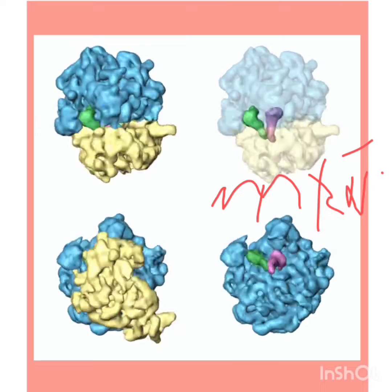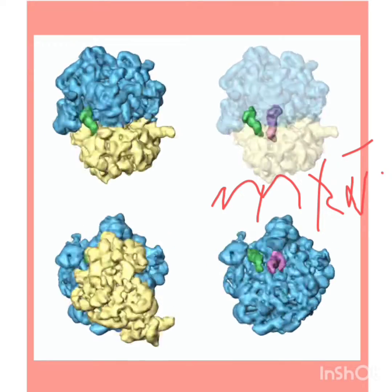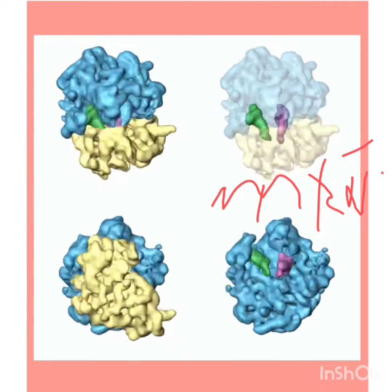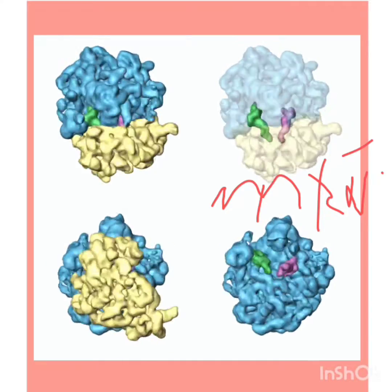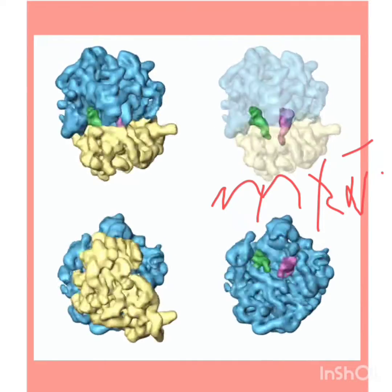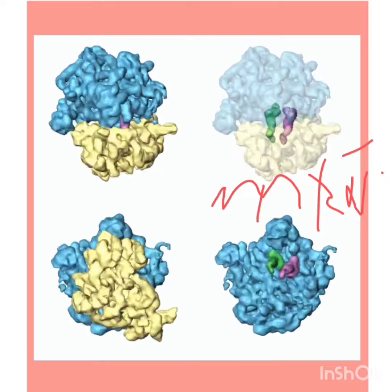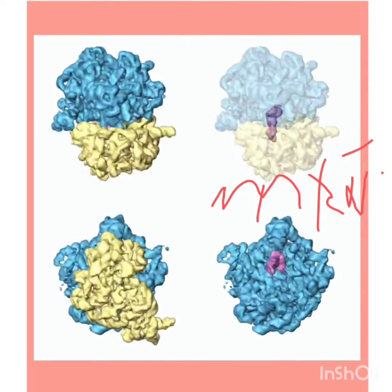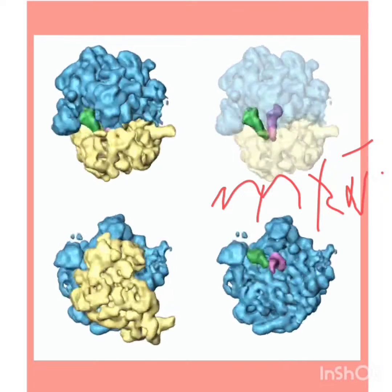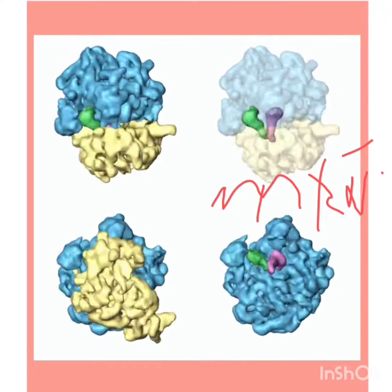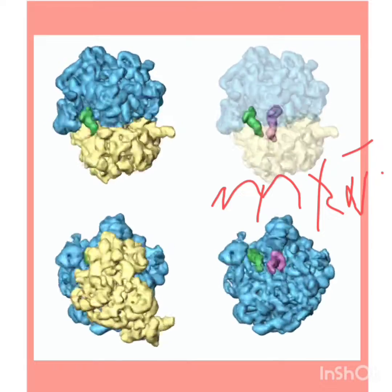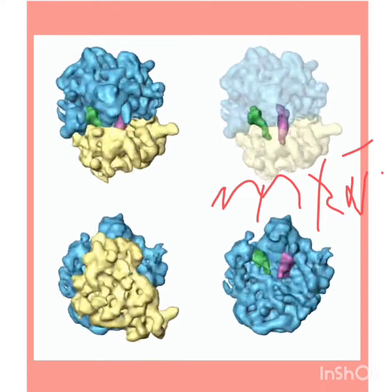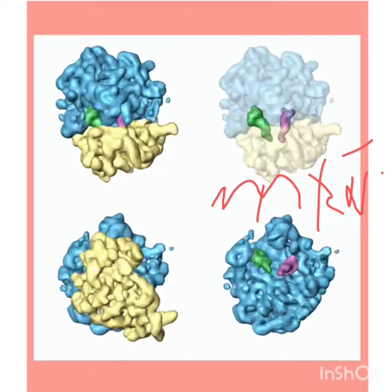So we can say that decoding the message and the formation of peptide bonds is done by ribosomes. Eukaryotic cells have lots of ribosomes because they are more advanced and bigger. If you want to know the difference between eukaryotic and prokaryotic cells, I have made a video on that topic as well.